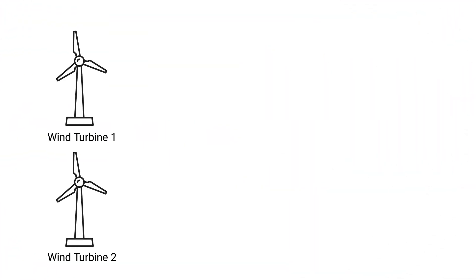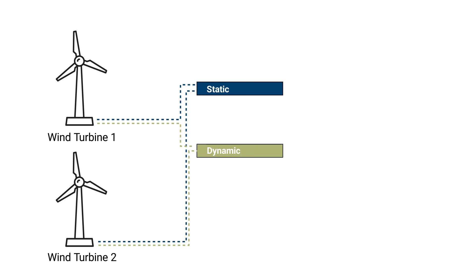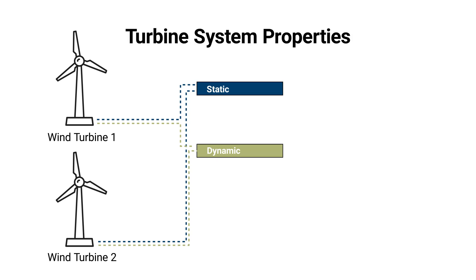For the purpose of this video, we'll assume that our physical asset is the wind turbine system. The diagram here illustrates the elements of a physical wind turbine system. A physical wind turbine system is composed of properties that can be classified as either static or dynamic.